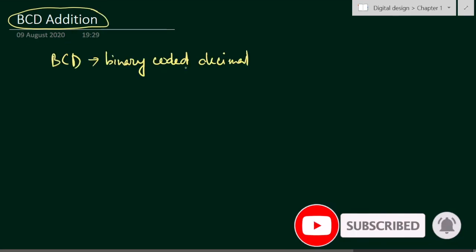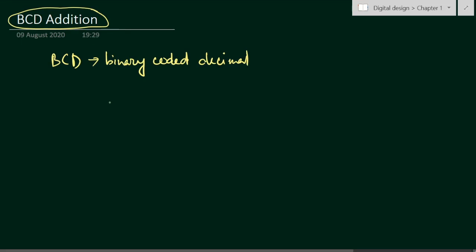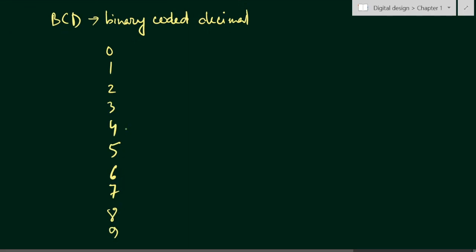In this video we will learn about BCD addition. BCD stands for Binary Coded Decimal, which means each decimal number is coded in binary. The decimal digits are 0 through 9. For 8 and 9 we need 4 bits — 8 is represented as 1000 and 9 as 1001 — so we use 4 binary bits for coding each decimal digit.